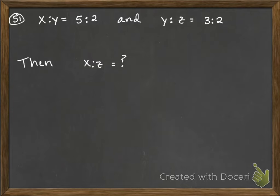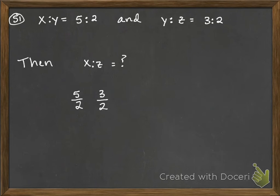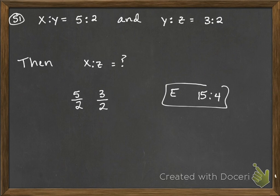What we can do right here is we can just think of this as 5 to 2 and 3 to 2. So if we think about this proportionally, our ratio is going to be 15 to 4. And that is going to be your answer for this one.